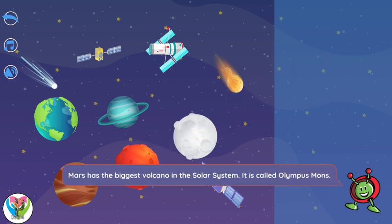Mars has the biggest volcano in the solar system. It is called Olympus Mons.